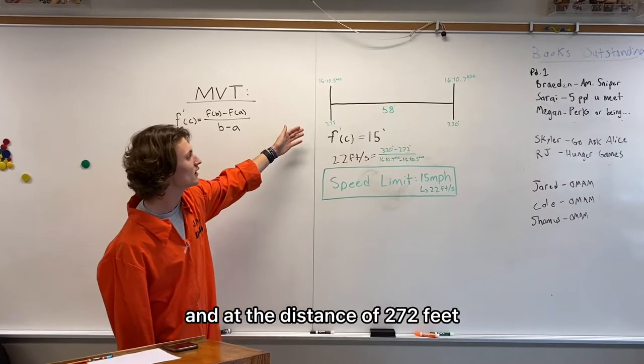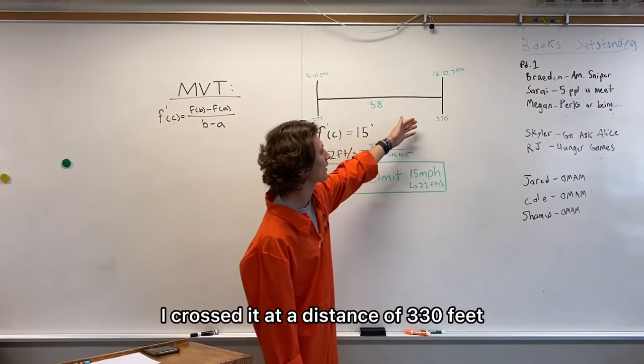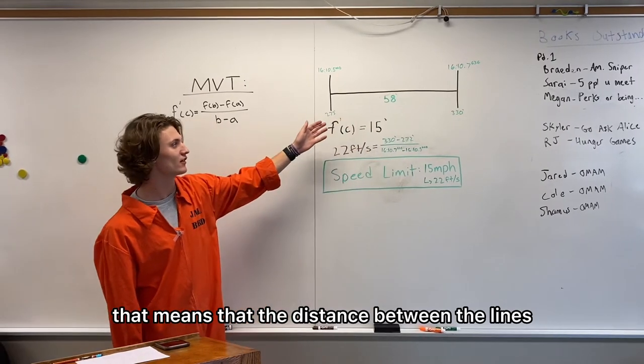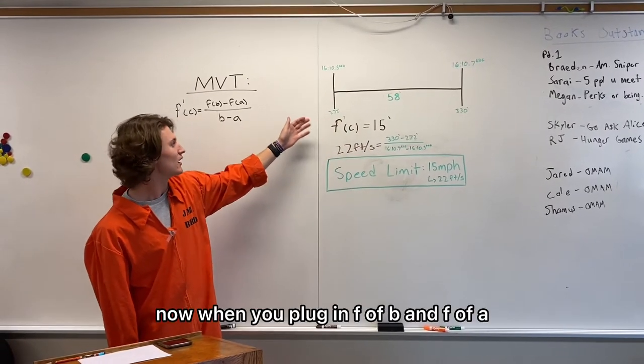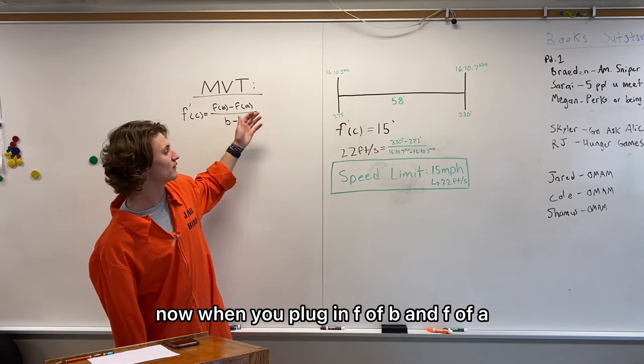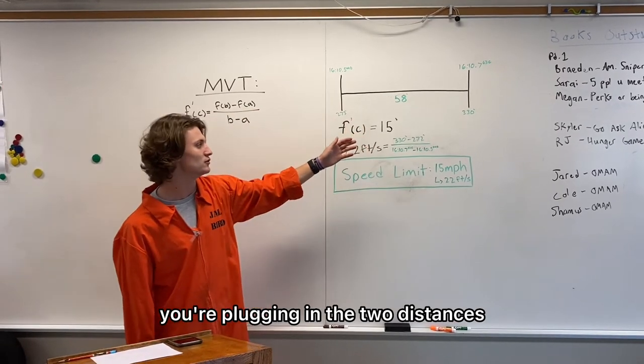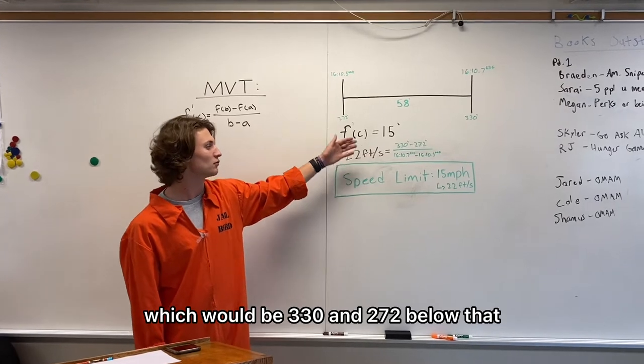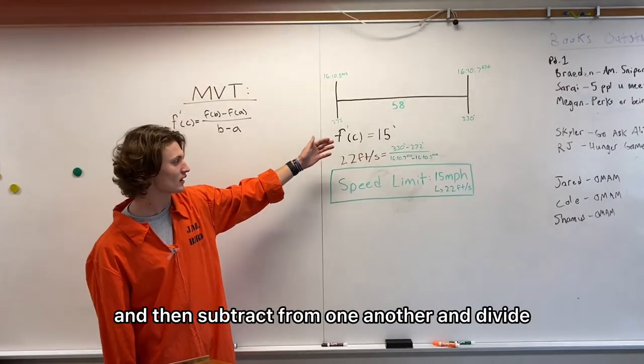When I cross the second line, I crossed it at a distance of 330 feet. That means that the distance between the lines was 58 feet. Now when you plug in f of b and f of a, you're plugging in the two distances which would be 330 and 272.